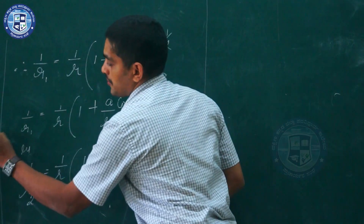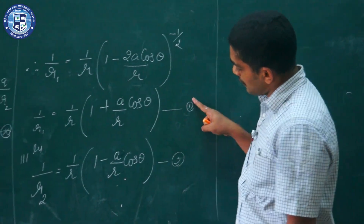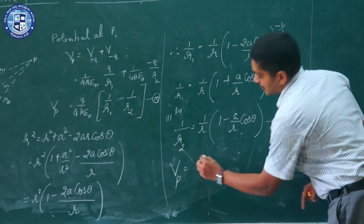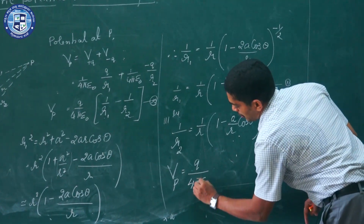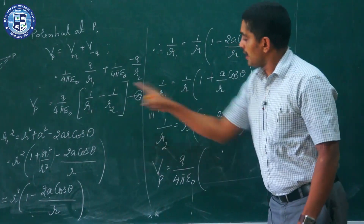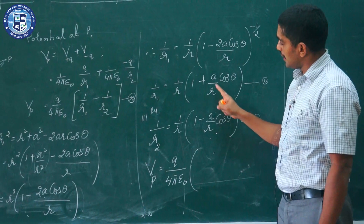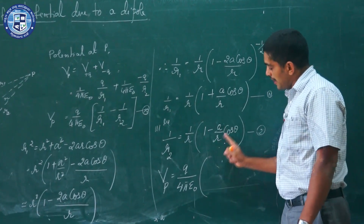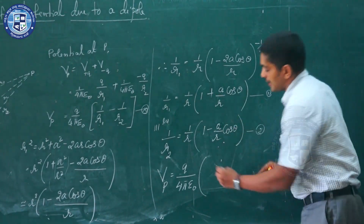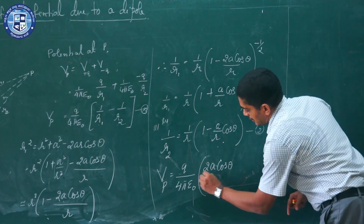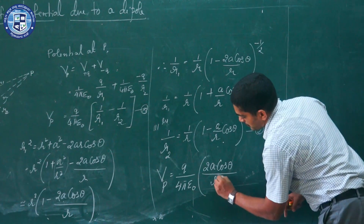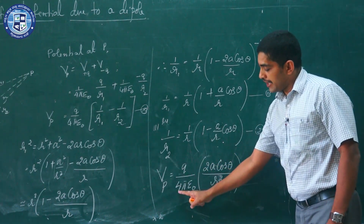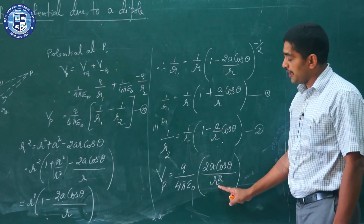Now let us substitute these two expressions into the formula for VP. We get: VP = Q / 4π ε₀ × [(1 + A cos θ / R) − (1 − A cos θ / R)] / R. The 1s cancel, giving VP = Q / 4π ε₀ × 2A cos θ / R². So, VP = Q / 4π ε₀ × 2A cos θ / R².